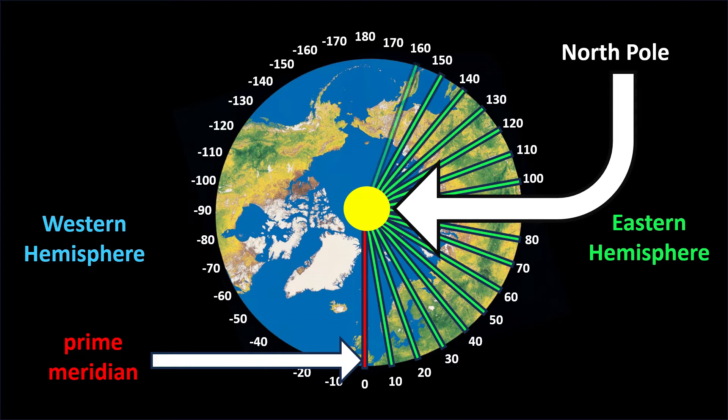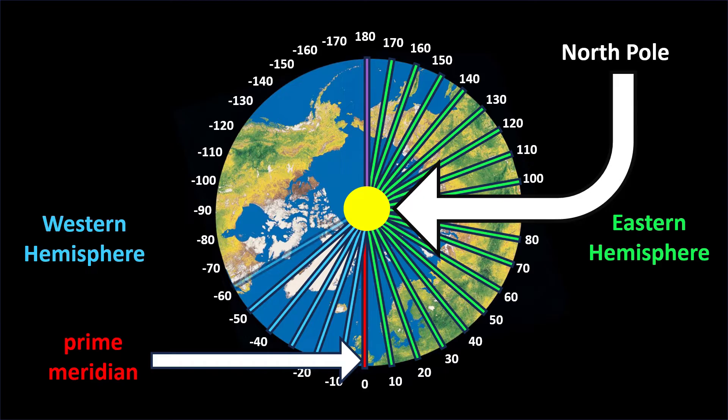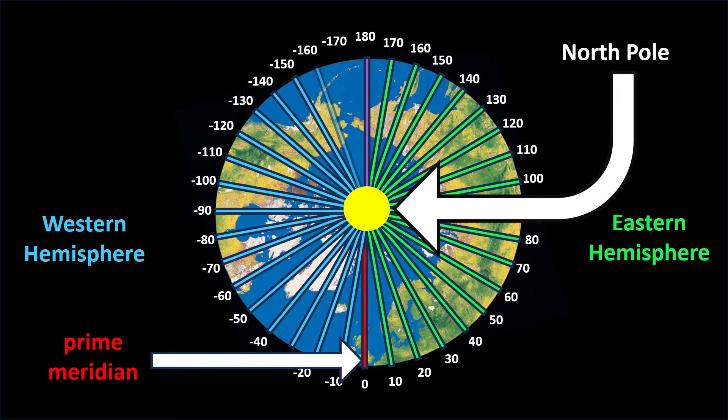But, in order to have different numbers from the Eastern Hemisphere, we call the numbers in the Western Hemisphere negative. This is similar to how we call the numbers of latitude degrees in the Southern Hemisphere negative, to distinguish them from the latitude degrees in the Northern Hemisphere.